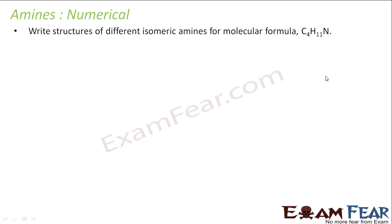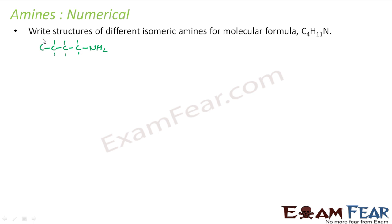For C4H11N, let's try to find the simpler ones — the straight ones. If I have four carbons written in a straight chain and put N at the end, I need to put two hydrogens on nitrogen. Counting all hydrogens gives eleven, so this gives me one structure — all straight chain — with no double bond.